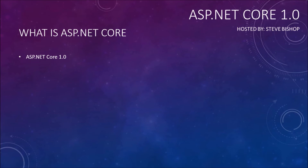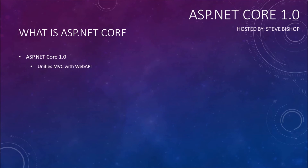Now let's talk about ASP.NET Core 1.0. They really kind of threw out the old book — they took everything from Classic ASP, ASP.NET, and ASP.NET MVC, threw out all the bad parts, started from scratch, and tried to keep just the good things. The result was that they were able to unify MVC with Web API so that now they are really the same thing and work off of the same controller.